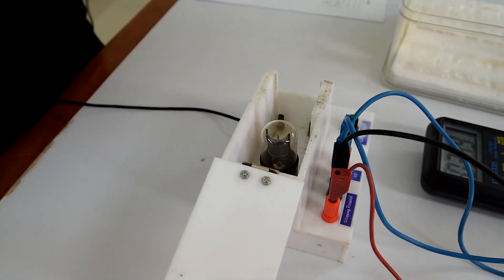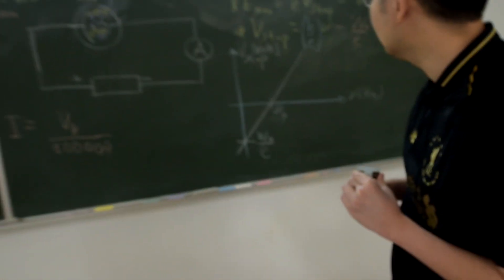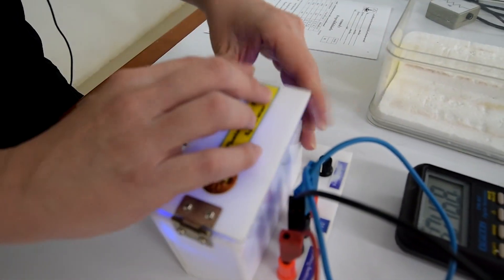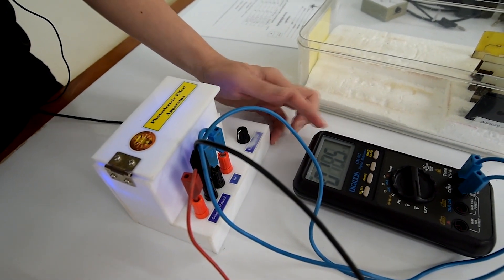We can observe that the lower wavelength, the higher frequency and also the stopping potential. Then the blue LED and violet LED. Finally, we will obtain the stopping potential at various wavelengths.